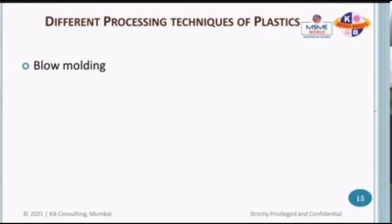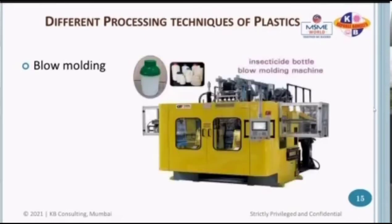The next process is blow molding. We looked at caps; now we learn how to make bottles — which is blow molding. There are different kinds of blow molding processes: EBM (extrusion blow molding), IBM (injection blow molding), and ISBM. In IBM, the preform is injection molded and blow molded right away. In ISBM, the preform is injection molded in one location, sent elsewhere, then heated and stretch blow molded. We're going to look at EBM — extrusion blow molding.